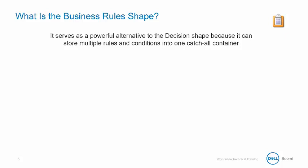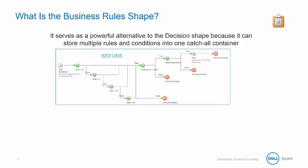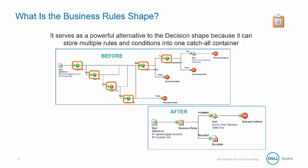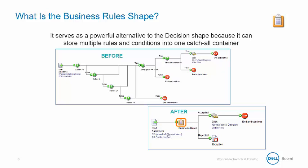The business rules shape serves as a powerful alternative to the decision shape because it can store multiple rules and conditions into one catch-all container. In this example, we have six decision shapes that form the logic for the process, making the process flow difficult to follow. We can take those six decision shapes and combine their logic into one business rules shape, and that makes it easier to follow the process flow.